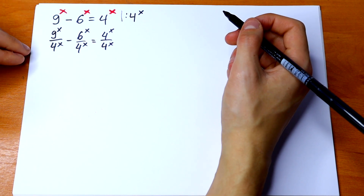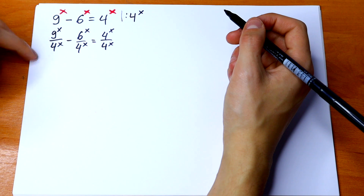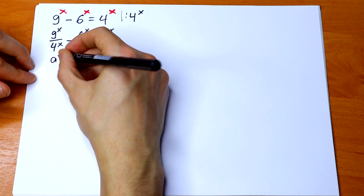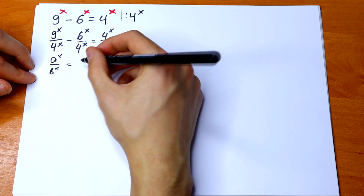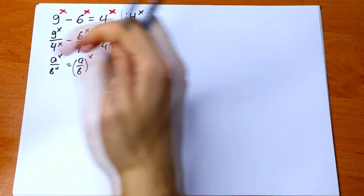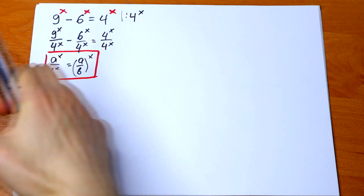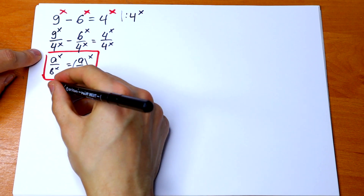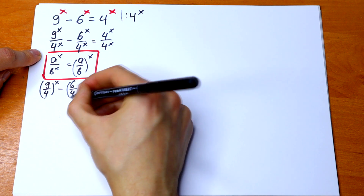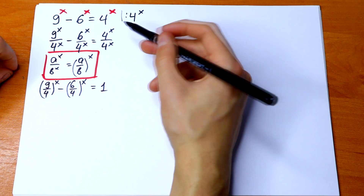Next, I'm going to use an interesting rule. If we have different bases but the same exponent, I can write it in one parenthesis. So if I have a to the power x over b to the power x, I can write it as (a over b) all raised to the power x. Applying this rule, we get (9/4)^x minus (6/4)^x equal to 1, since 4^x over 4^x cancels to 1.